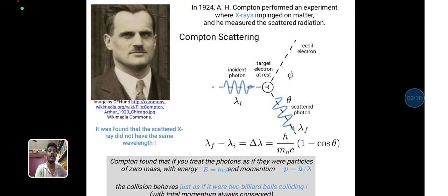Compton found that if you treat the photon as if they were particles of zero mass with the energy equal to hc divided by lambda and momentum p is equal to h divided by lambda.